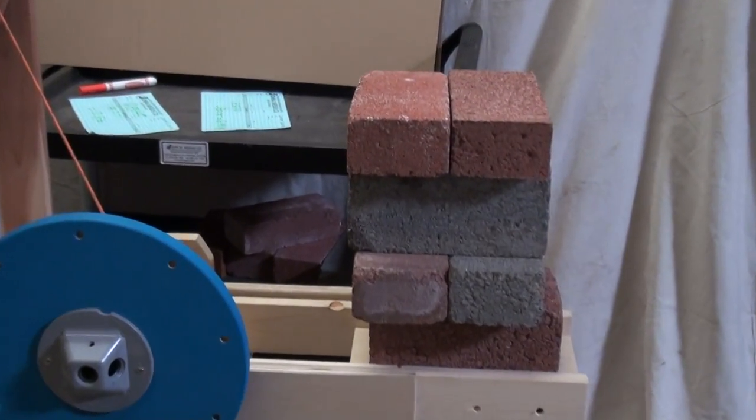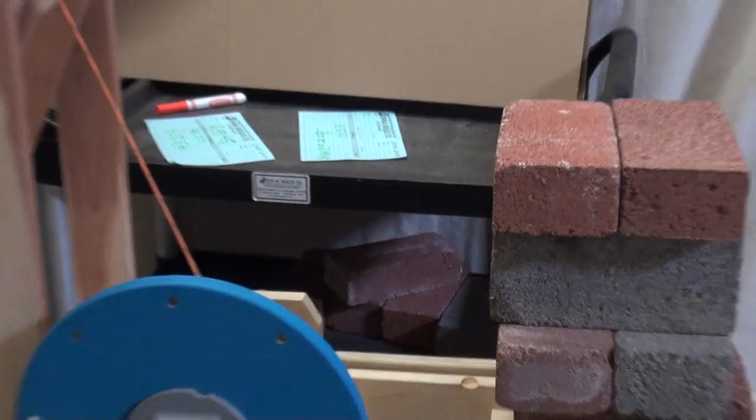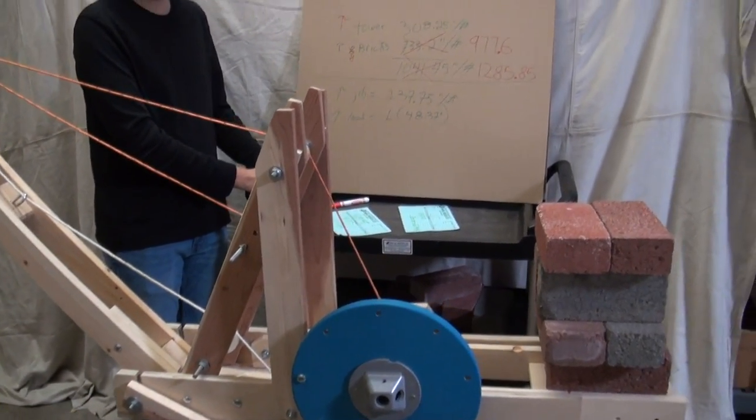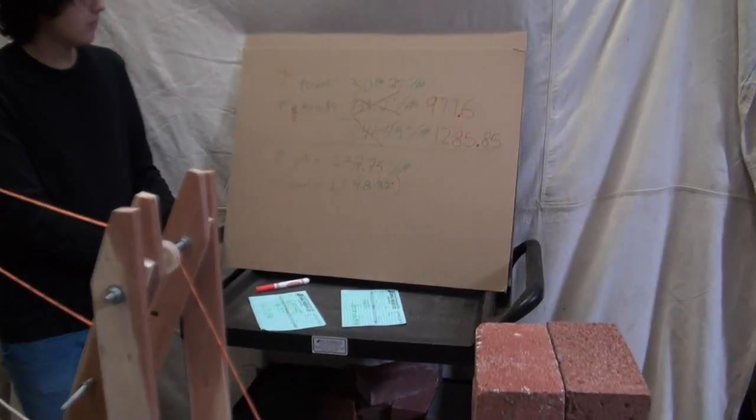So now we increase the counterweight to eight bricks. The boom is still at 50 degrees and the jib is still at 50 degrees, and we want to find out what the maximum load we can lift with a safety factor of 1.5.